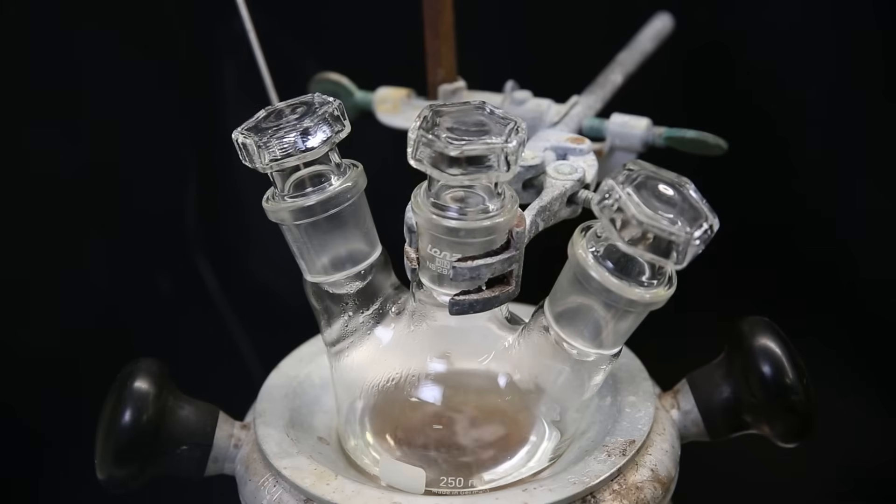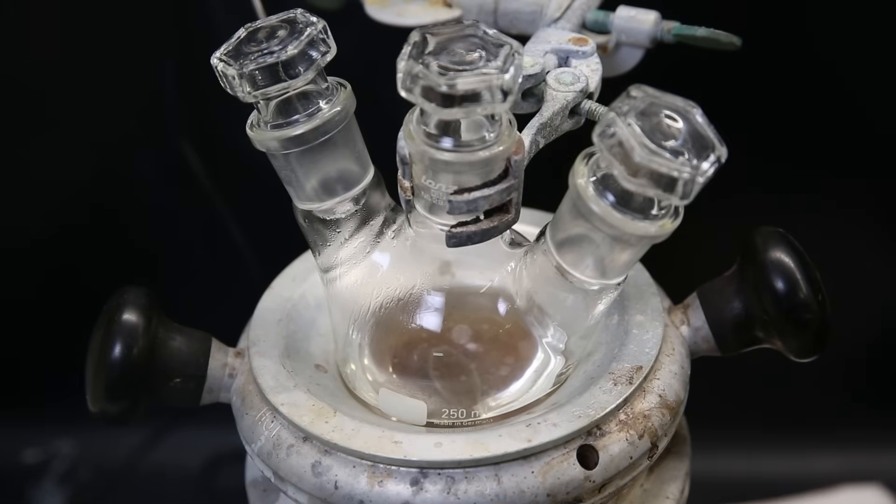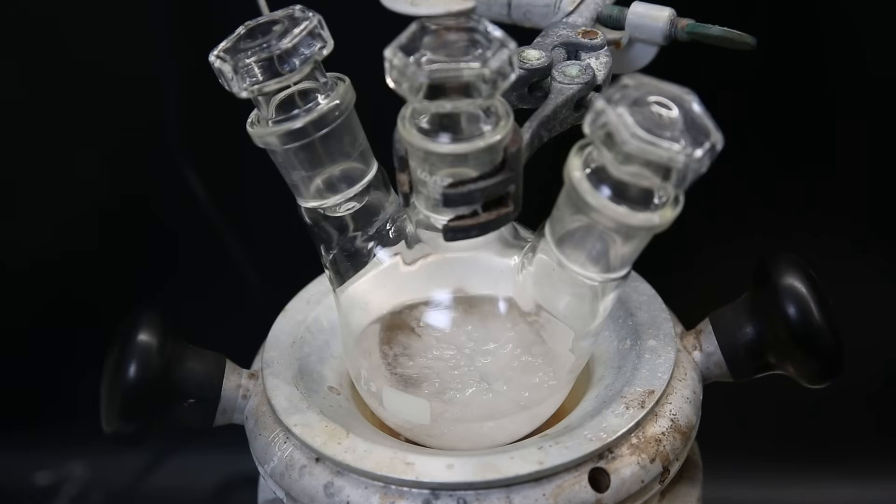When all of the solid has dissolved, I turn off the stirring and heat, and let it cool down slowly to ambient temperature. I leave it overnight, and when I come back, a large crystal of 9BBN has crystallized out of solution.